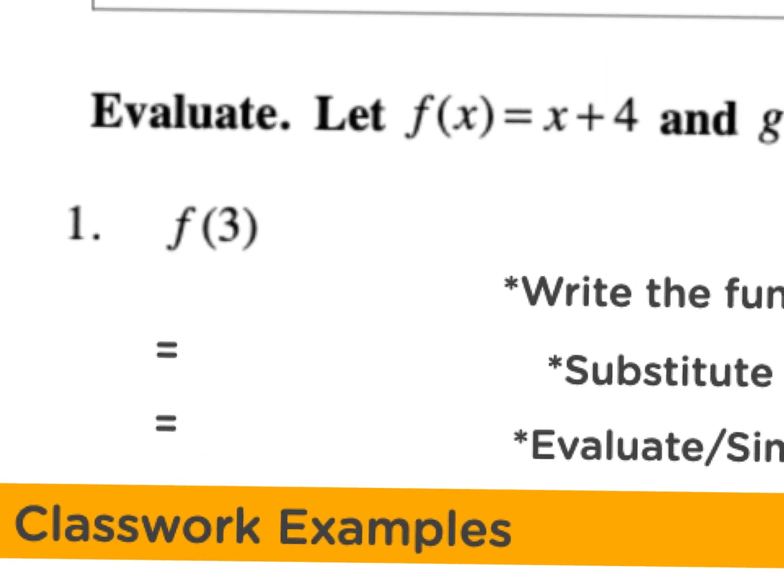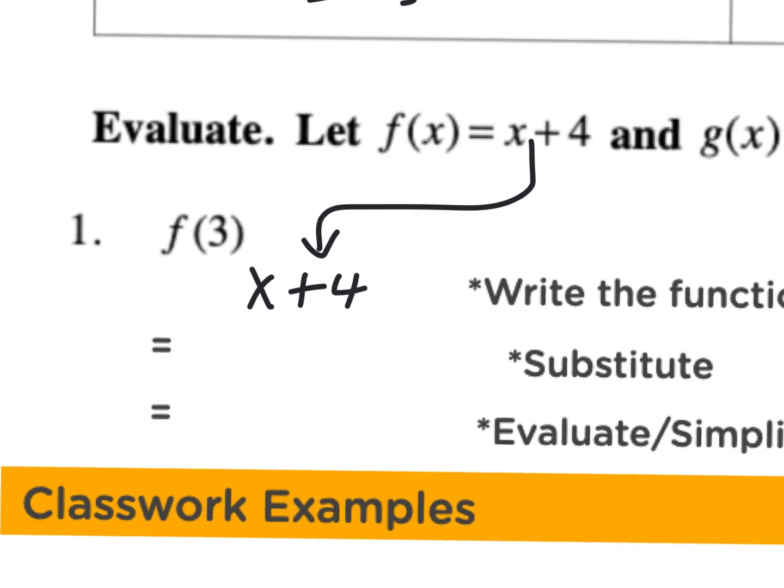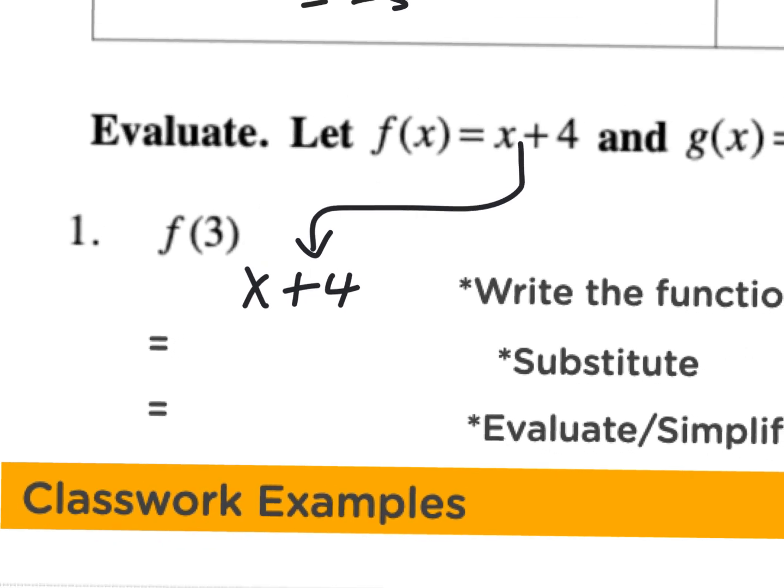It says find f of 3. Don't do anything with that - it's just there to tell you the name of the function. Take that x plus 4 and move it down here. What number am I getting ready to substitute for the x? 3, because it says find f of 3. So instead of x plus 4, we'll do 3 plus 4, which equals 7. Looks complicated, but the math itself really is not, folks.